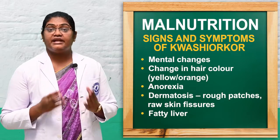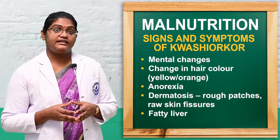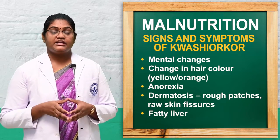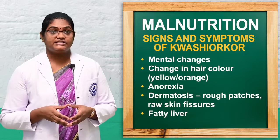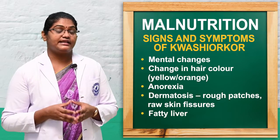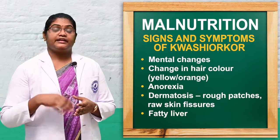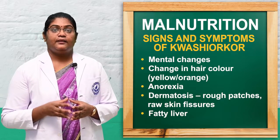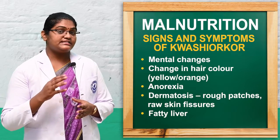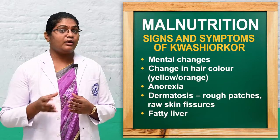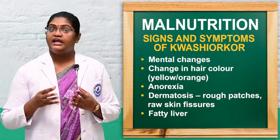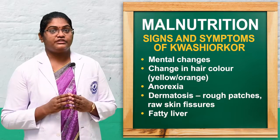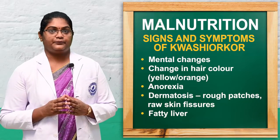Other symptoms of kwashiorkor include mental changes such as anxiety, irritability, and sleep disturbances. There is also dermatosis — skin lesions with rough skin and raw skin fissures — and color changes of the hair, where hair becomes orange or yellow in color.